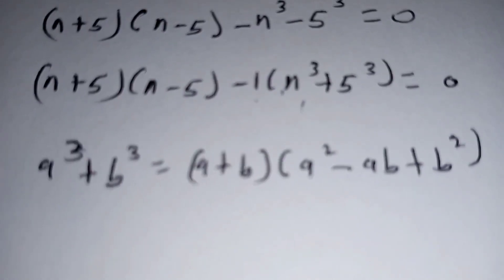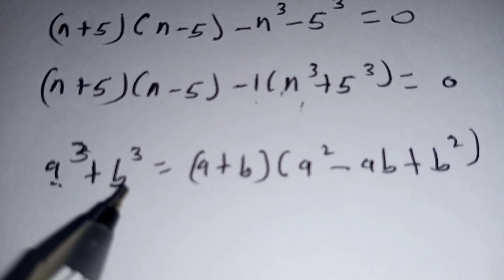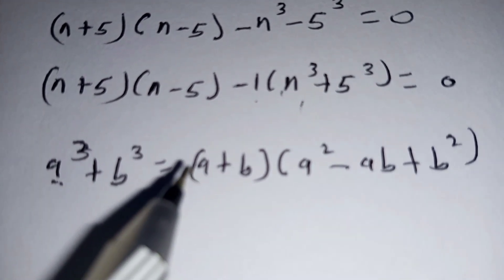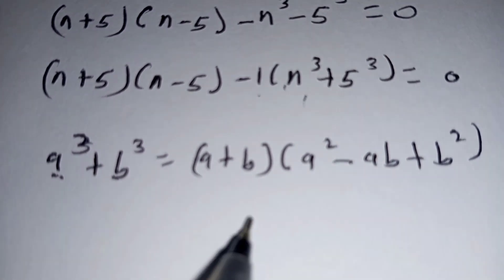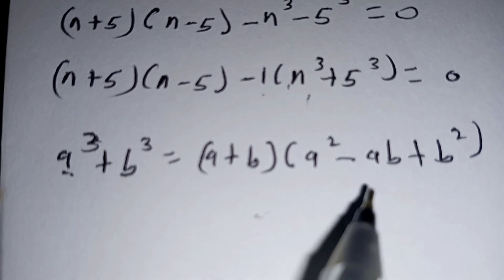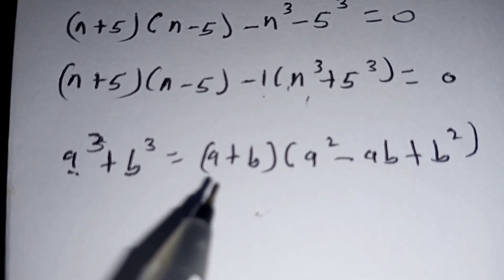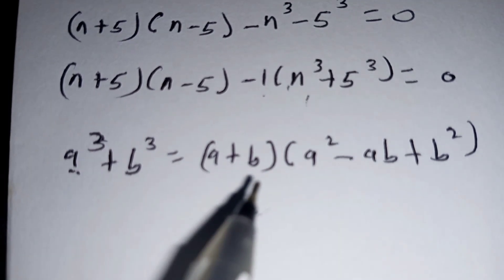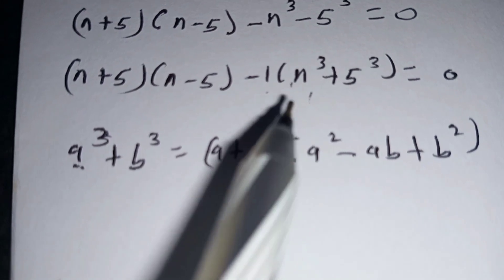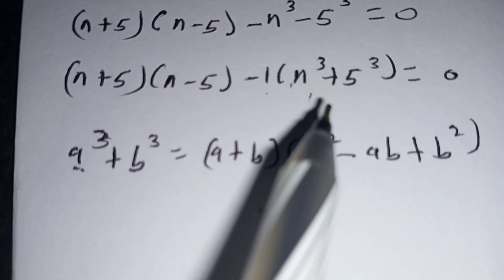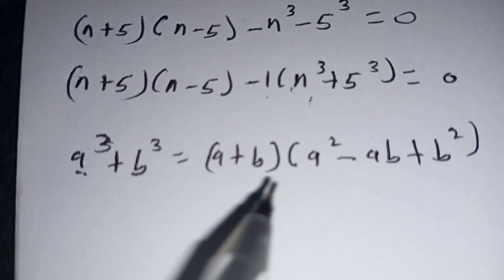We shall make use of this identity: when you have a cubed plus b cubed, it is the same as bracket a plus b multiplied by a squared minus ab plus b squared. In our case, our a is n and our b is 5. So rewriting this part with n cubed plus 5 cubed in the form of this identity, we shall have the following result.